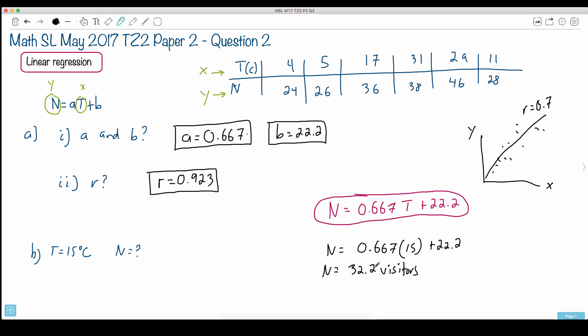Is this really an answer that makes sense? Could it really be 32.2 visitors? No. So you have to round it down. So in this case, you could say, fine, then N equals 32 visitors.